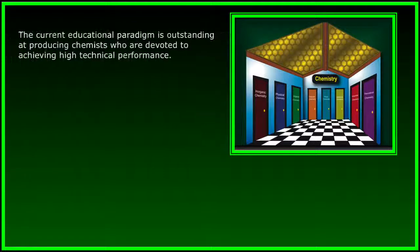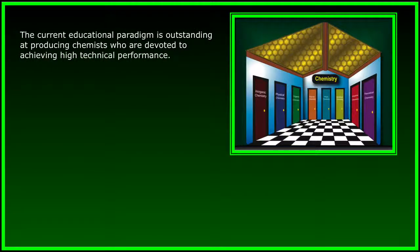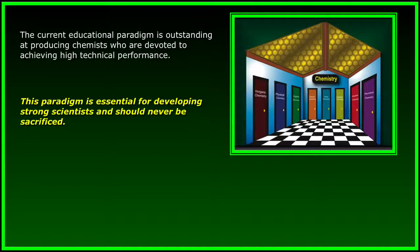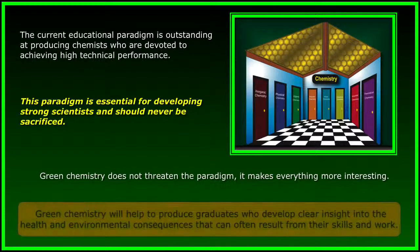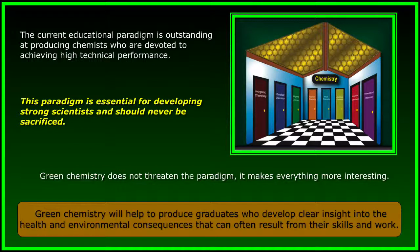Green Chemistry's highly multidisciplinary nature means that we'll bring people together from a variety of fields to work together to solve problems of producing the products and processes of a sustainable civilization. The current educational paradigm is outstanding at producing chemists who are devoted to achieving high technical performance. This paradigm is essential for developing strong scientists, and it should never be sacrificed. Green Chemistry does not threaten the paradigm. It makes everything more interesting. Green Chemistry will help to produce graduates who have clear insight into the health and environmental consequences that accompany the exercise of the chemist's skills.